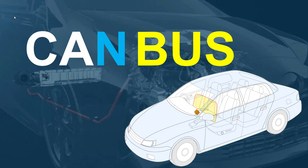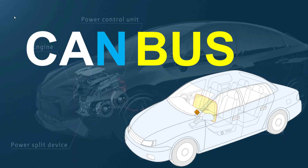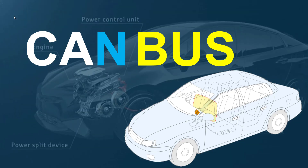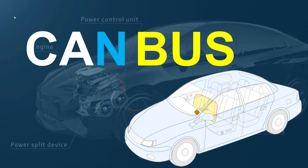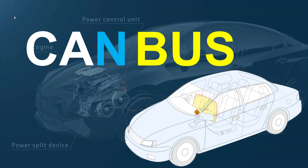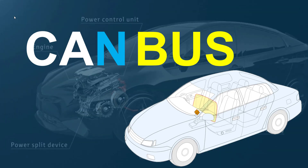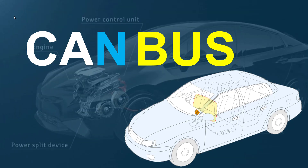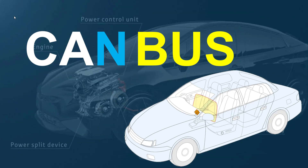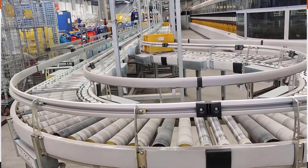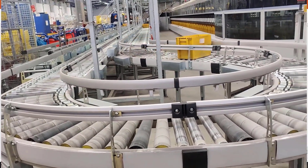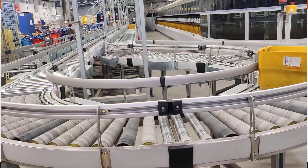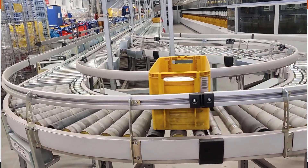In short, the CAN bus is a vehicle bus standard designed to allow microcontrollers and devices to communicate with each other's applications without a host computer. If more than one device transmits at the same time, the highest priority device can continue while others back off. With that, we conclude today's video. If you liked this video, consider hitting the like button and subscribe if you haven't yet. Until next time, take care and bye.